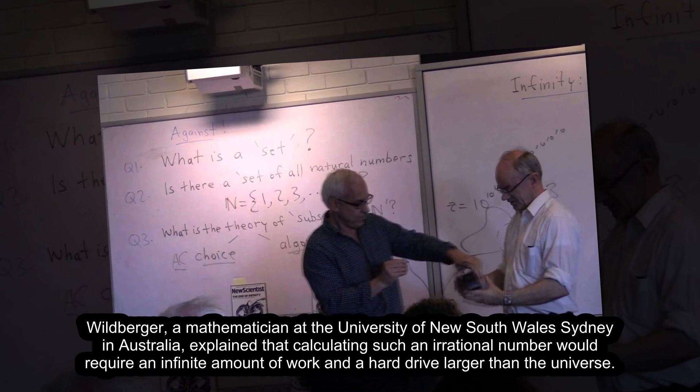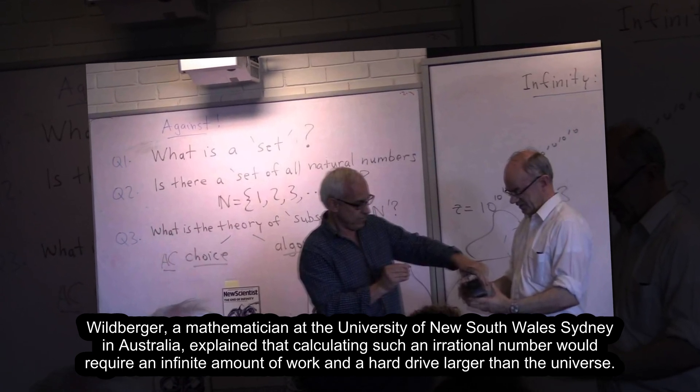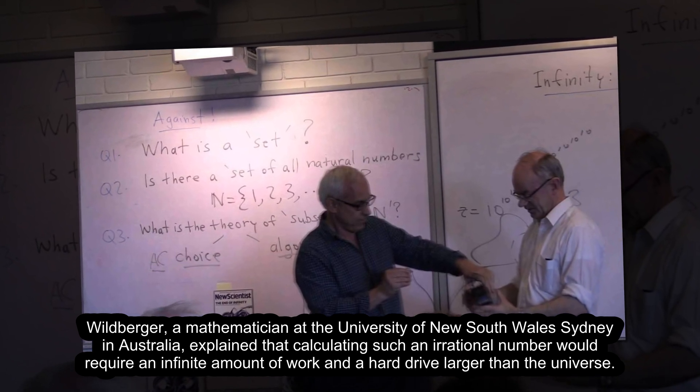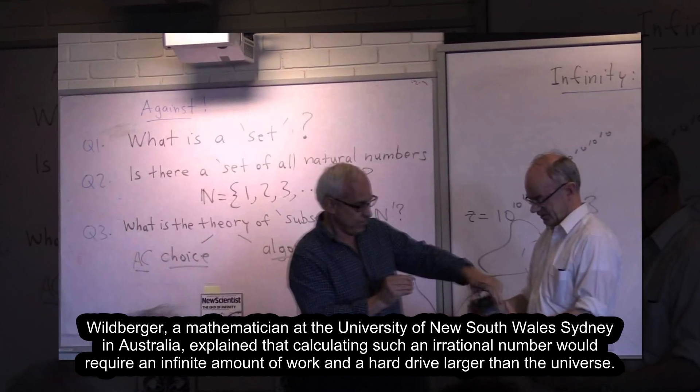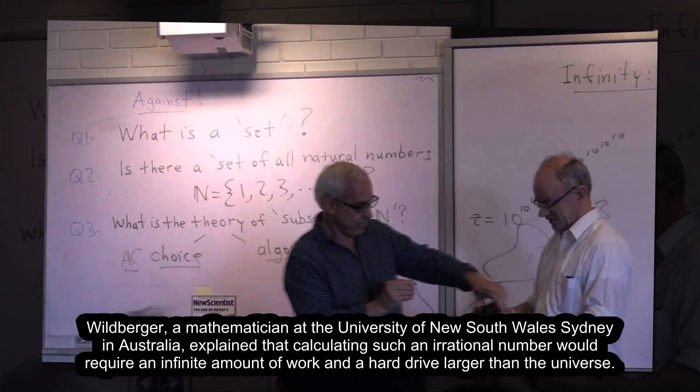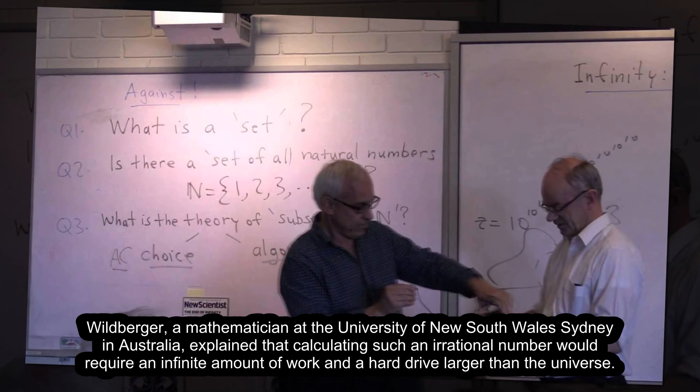Wildberger, a mathematician at the University of New South Wales, Sydney in Australia, explained that calculating such an irrational number would require an infinite amount of work and a hard drive larger than the universe.